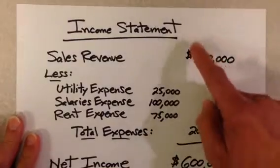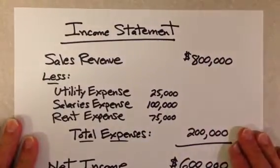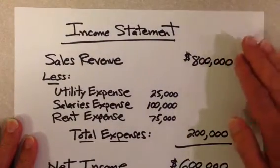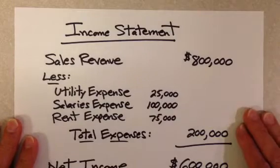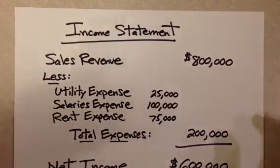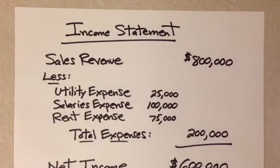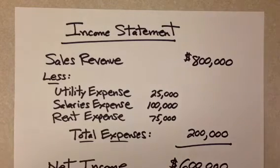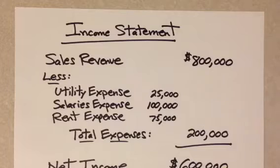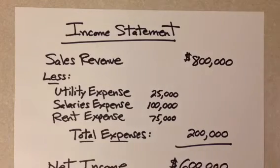The first is the income statement. What I've put together here is one of the most simple, basic income statements that you would see. A typical income statement at the top will list the name of the company, such as the ABC Company, and it will also tell you the period for which that income statement applies — that might be a specific month, a quarter, or over a whole year. Typically, we will look at the income statement for a company that spans an entire fiscal year.